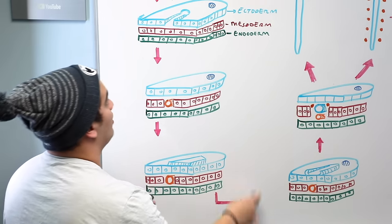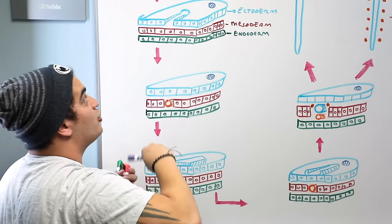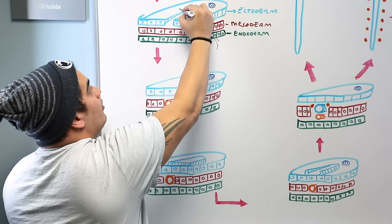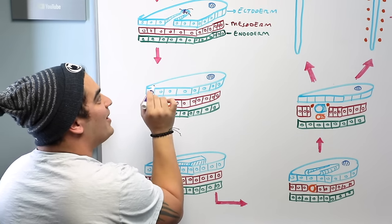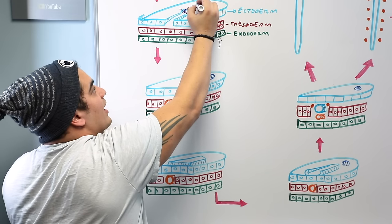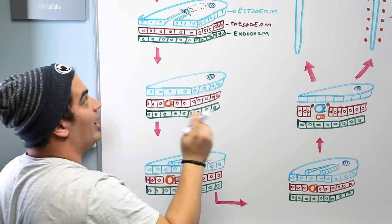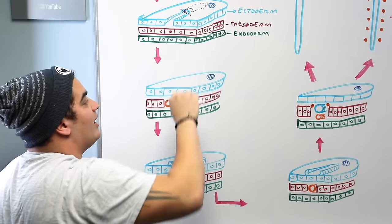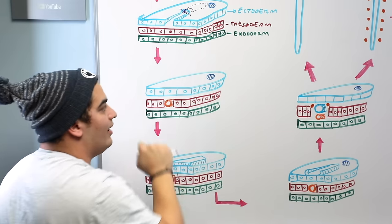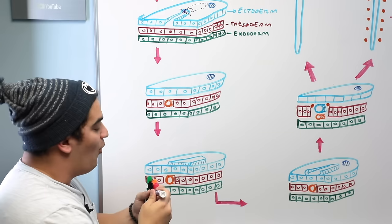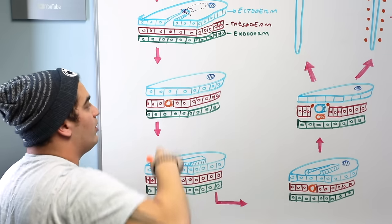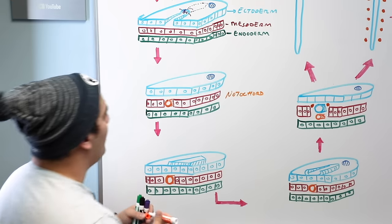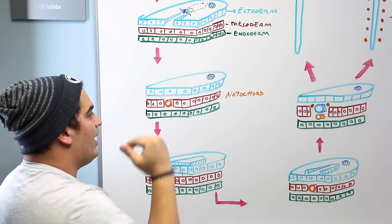Something interesting happens. Remember those epiblast cells moving through the primitive streak? There's another little divot called the primitive node. Some ectodermal cells start moving through the primitive node in a tubular process towards the pre-cordal plate or cranial end. They eventually form an entire cord or tube underneath the ectoderm and between the mesoderm. That tubular process formed from ectodermal cells moving through the primitive node is called the notochord.